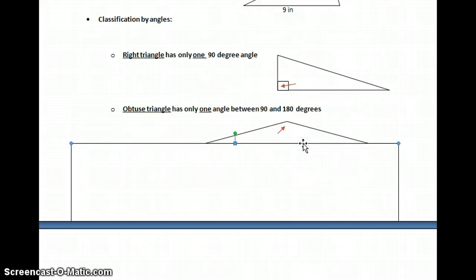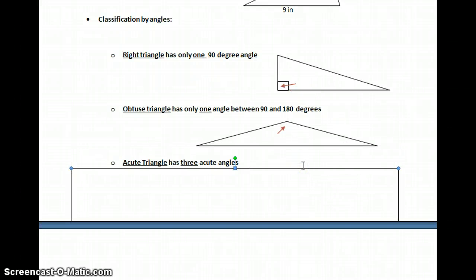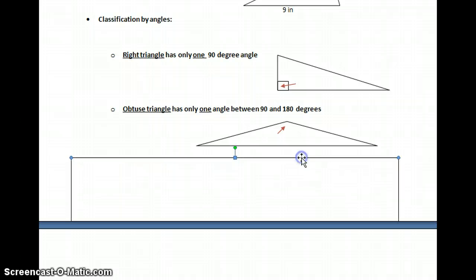Our second way to classify by angles is called an obtuse. If you remember from before, an obtuse angle is open wide between 90 degrees and 180 degrees. An obtuse person is loud. So, an obtuse triangle has only one angle between 90 and 180 degrees. It can't have more than one, otherwise it wouldn't be a triangle.